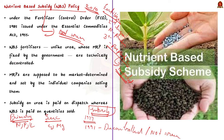The subsidy goes to the fertilizer company, although its ultimate beneficiary is the farmer, who pays MRP less than market-determined rates. From March 2018, a Direct Benefit Transfer (DBT) system was introduced, wherein the subsidy payment to the company happens only after actual sales to the farmers by retailers. With the DBT system, each retailer — there are over 2.3 lakh of them across India — has a point of sale machine linked to the Department of Fertilizers' e-Urvarak DBT portal.